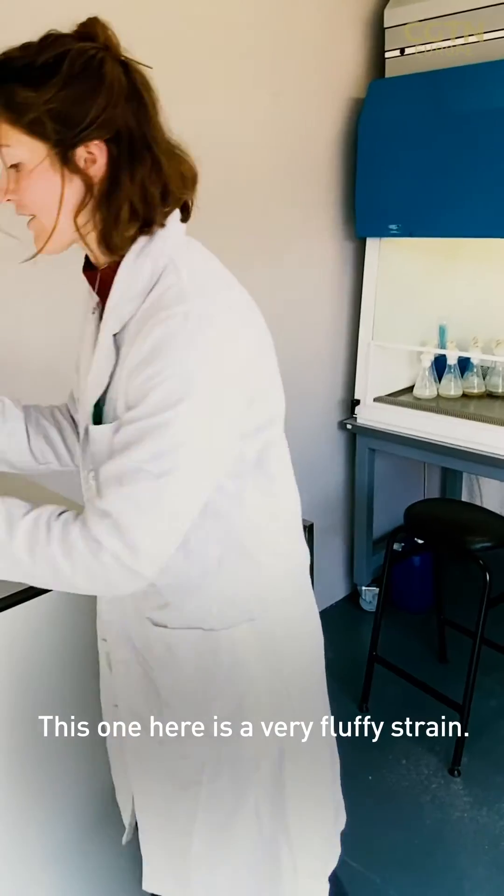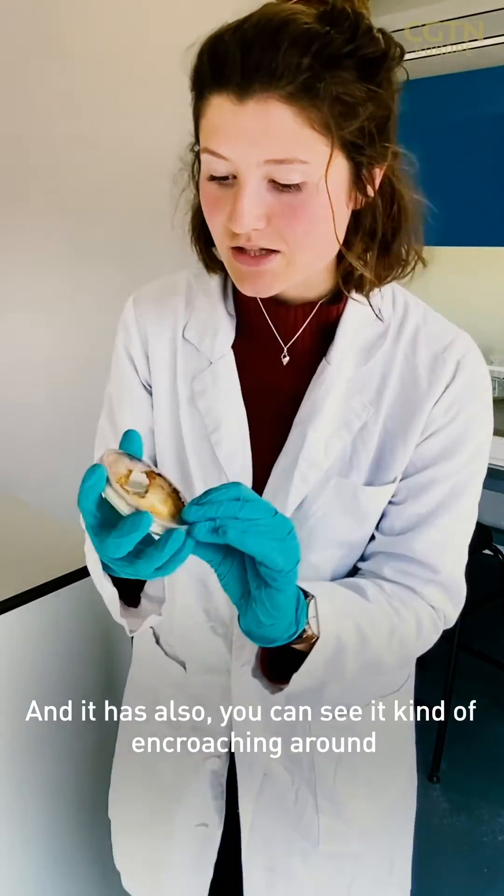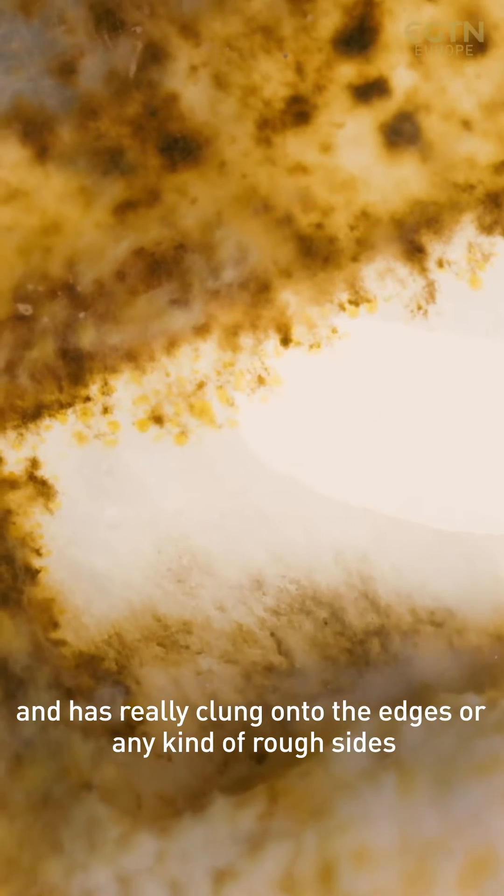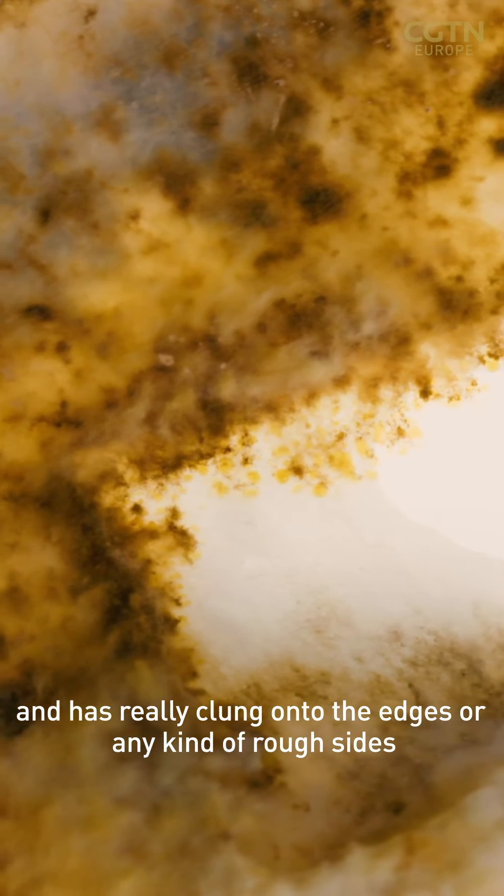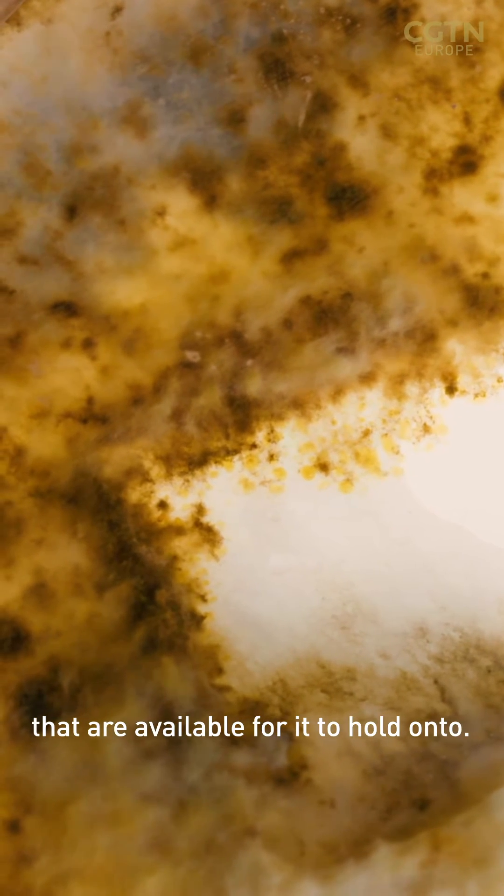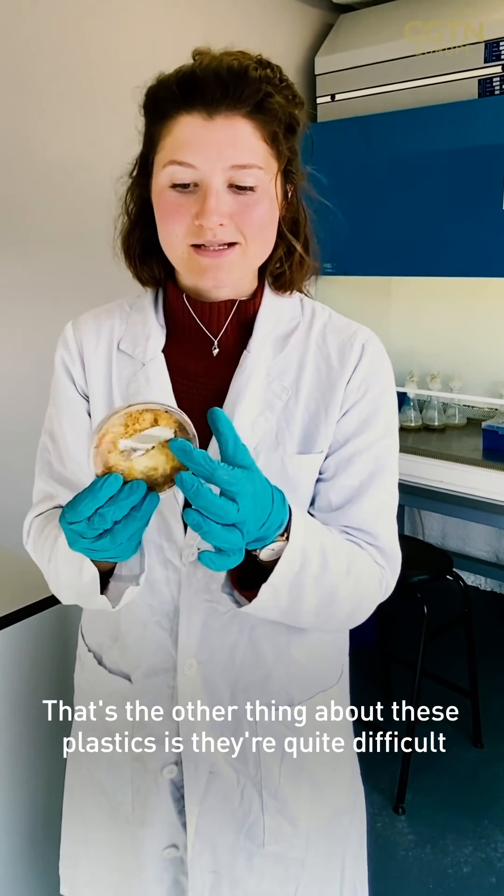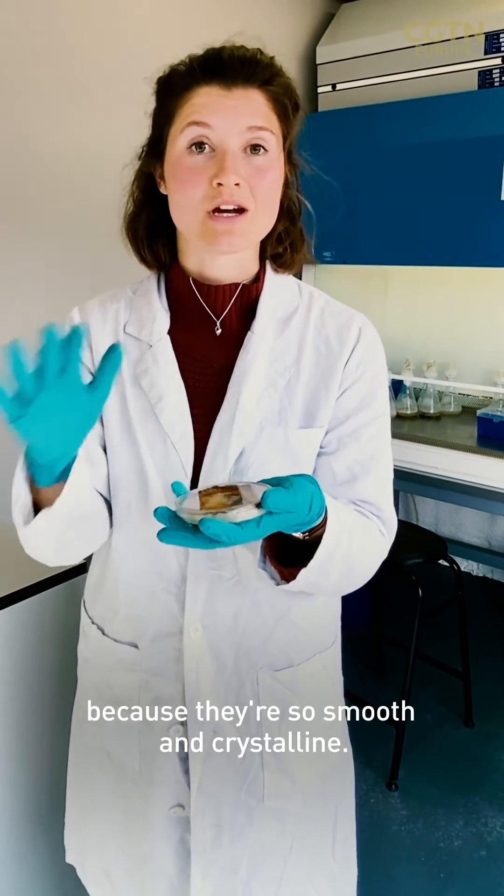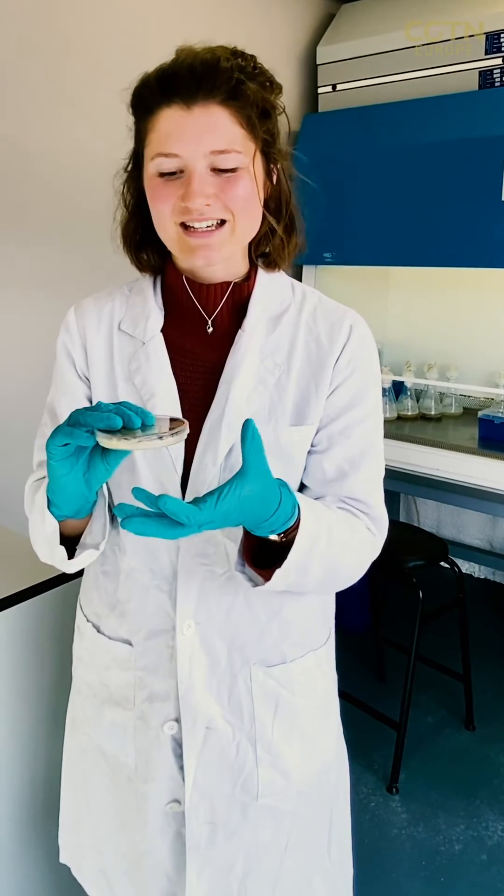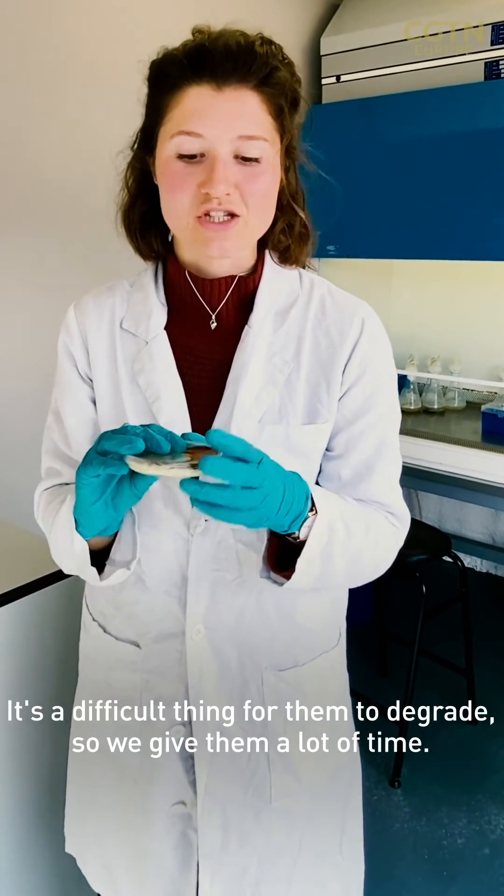This one here is a very fluffy strain and it has also, you can see it kind of encroaching around and has really clung onto the edges or any kind of rough sides that are available for it to hold on to. That's the other thing about these plastics is they're quite difficult for them to grab onto because they're so smooth and crystalline. It's a difficult thing for them to degrade, so we give them a lot of time.